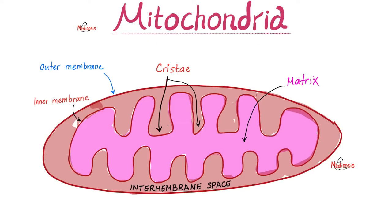Recall the structure of the mitochondrion. The outer part is the outer membrane, then there's the inner membrane. Between the outer membrane and the inner membrane, what do you call this space? The inter-membrane space. And what are the names of these infoldings? Cristae, which increase the surface area available for oxidative phosphorylation to help you make more energy.